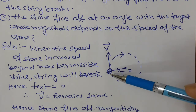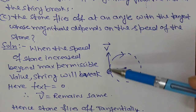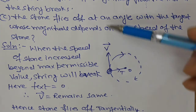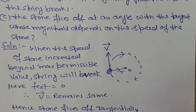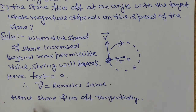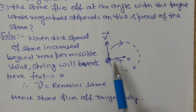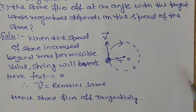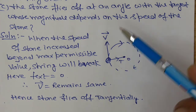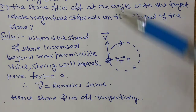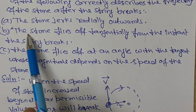Before the string breaks, if the stone is moving in a particular direction just before the break, then after the string breaks, the stone continues to move in that same direction. The stone flies off tangentially. Therefore, option B is correct.